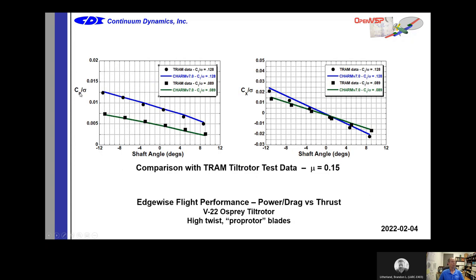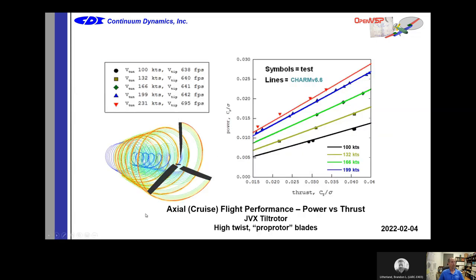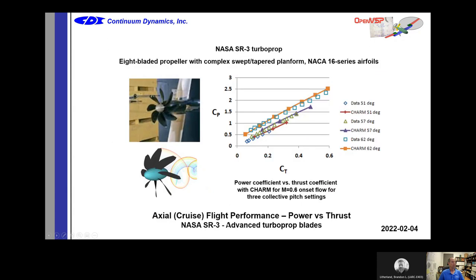These are TRAM tilt rotor test data — power versus shaft angle at different thrust angles, and propulsive force. This is an important configuration because these are highly twisted prop rotor blades in edgewise flight. The same model in CHARM can predict these without any tuning adjustments for a higher twist blade. For axial flight, here's cruise for JVX — power versus thrust. You might also be interested in advanced turboprop blades, which are much lower aspect ratio — with our vortex lattice method, you can predict power versus thrust for those as well.